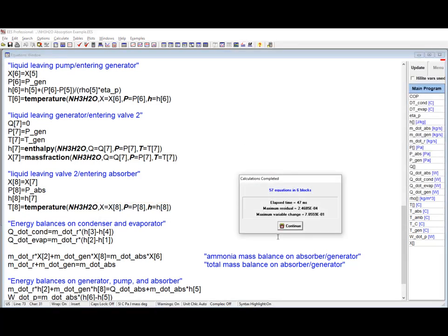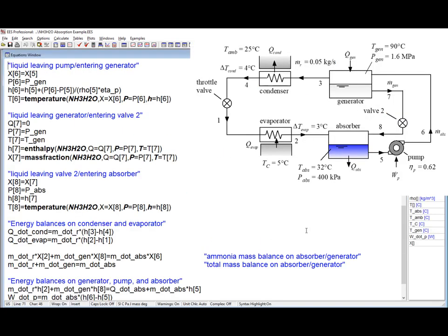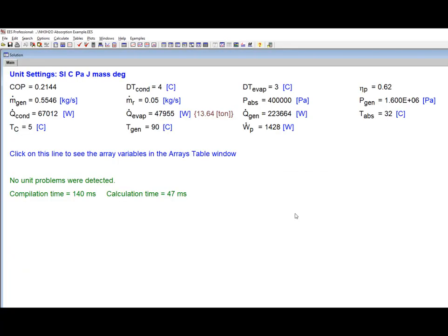At this point all the state points have been specified. Energy balances on the condenser and the evaporator can be used to determine the heat rejection and the refrigeration effect respectively. So you can see here that this cycle produces 48 kilowatts of refrigeration or 13.6 tons.